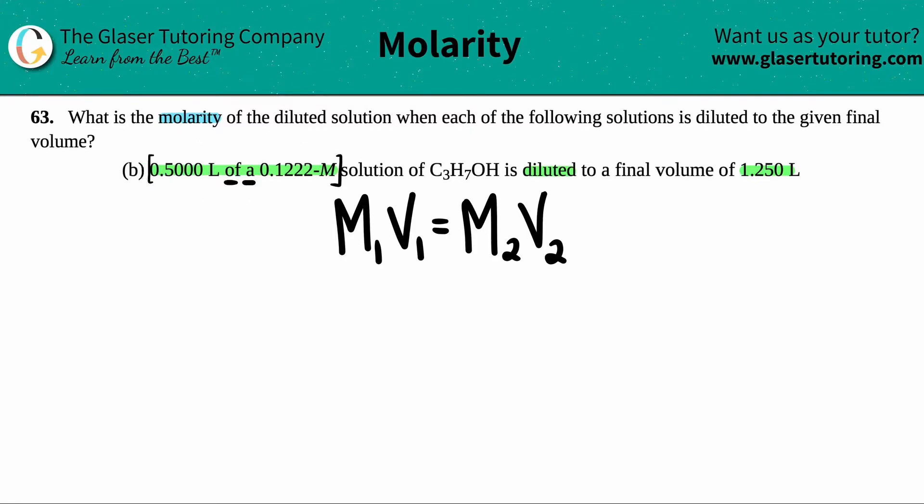So I know that these two numbers have to go on one side of the equal sign. Doesn't matter which side because they're both equal to each other. I'm going to do it on the left, so I know that this molarity is 0.1222, that's capital M for molarity, and the corresponding volume is 0.5000, three zeros, and that's liters.